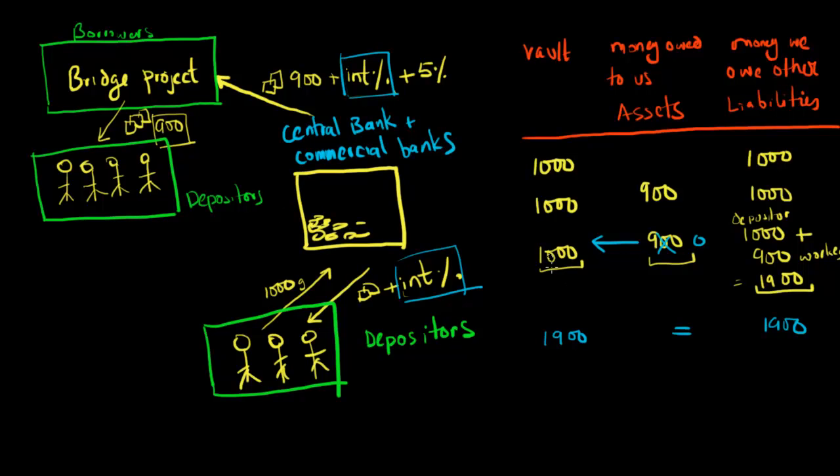So in this case, the amount in obligations that the banks have to other people is still 1,900, but they're only ever going to have 1,000 gold coins in the vault because this 900 no longer exists. And because of this, their liabilities would be greater than actually what they have in the vault. And so this situation would be called a situation where the bank is insolvent.